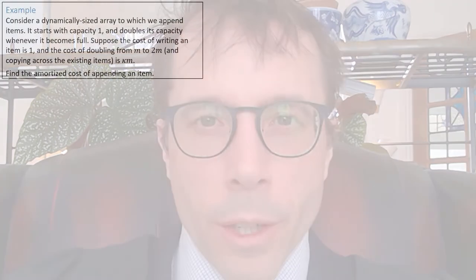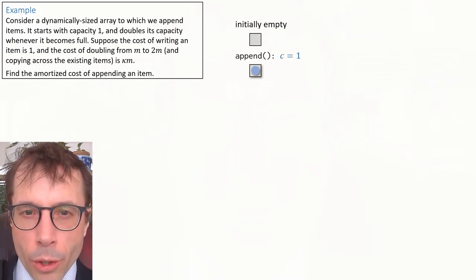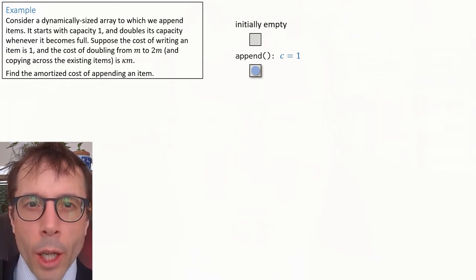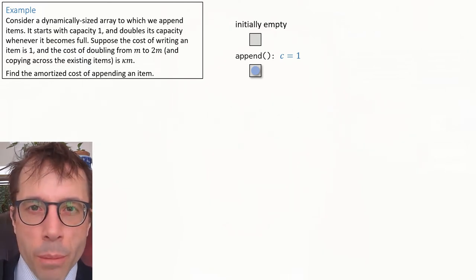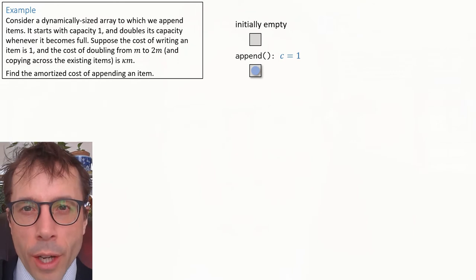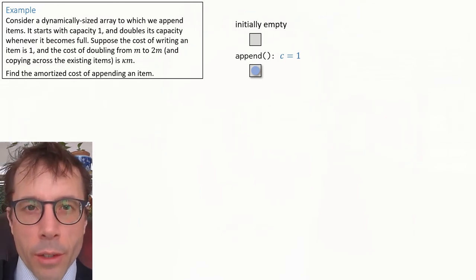Let's work through a practical example. Pause the video, have a read of this example, then press play. Let's just sketch out the data structure we're talking about here. We're talking about a dynamic array and we're appending elements one by one. If we start off with an empty array size one and append an item, we get this. And the cost of doing so is one because all we did is write in that item.